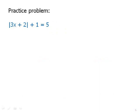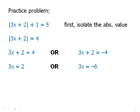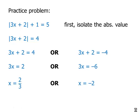Here's a practice problem — pause the video and then we'll talk about this. With this problem, we have to isolate the absolute value first by subtracting one. Once we do that, we break it into two equations, solve each individually, divide by three, and we get x equals positive two-thirds or x equals negative two. Those are the two solutions.